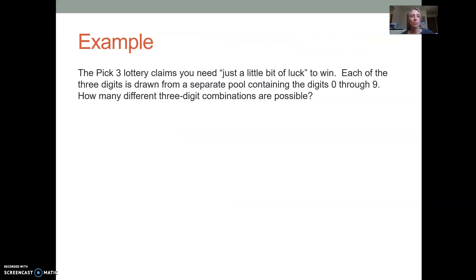Let's look at another example. The pick three lottery claims you need just a little bit of luck to win. Each of the three digits is drawn from a separate pool containing the digits zero through nine. How many different three-digit combinations are possible? So if we lay this out, the way I like to lay out my counting principle questions is I say, okay, here's the first number that's drawn, here's the second number that's drawn, here's the third number that's drawn. And then beneath it, I'm going to write what the options are. So it says each one is zero through nine.